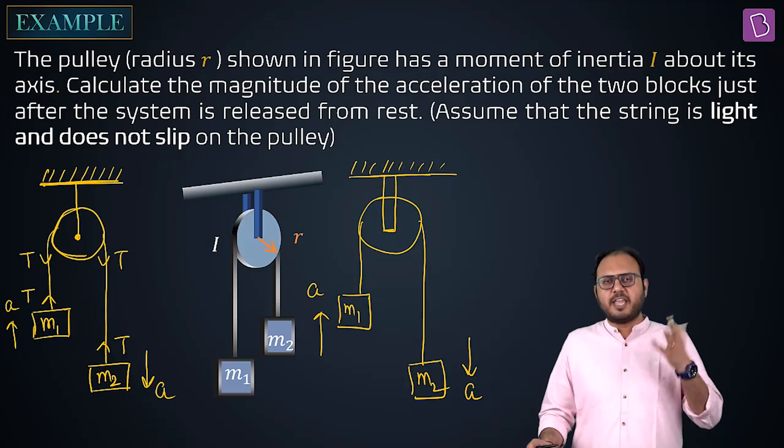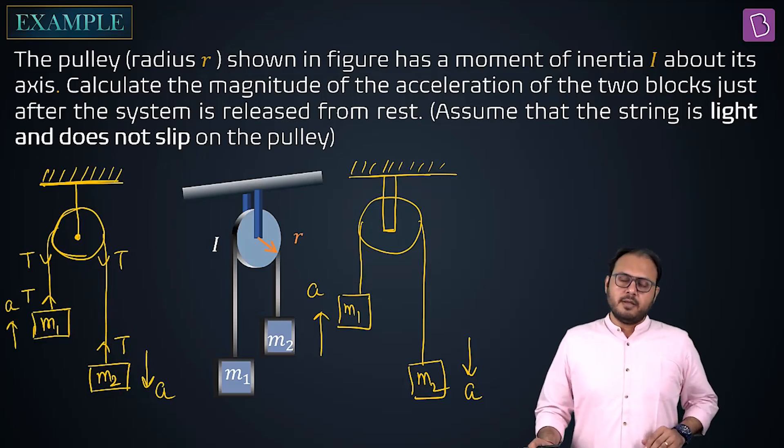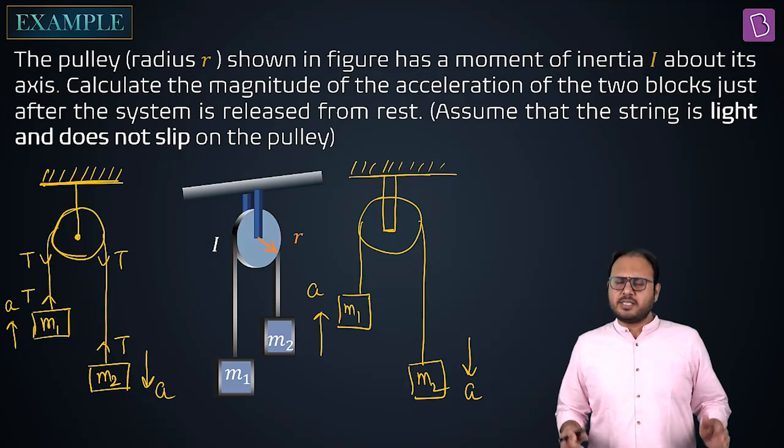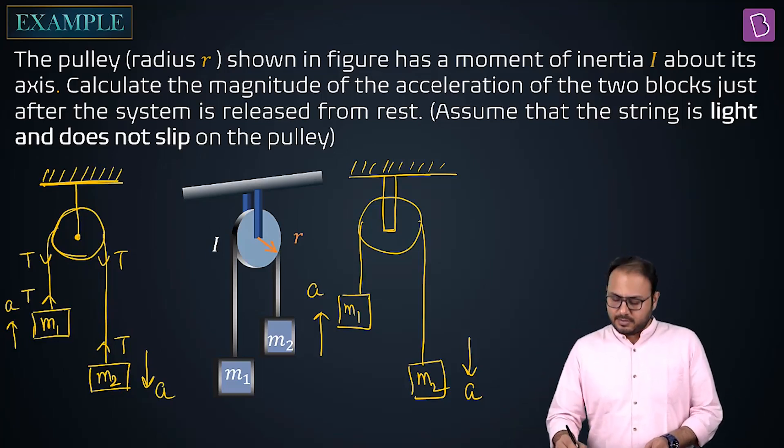Forget about it. Why will the acceleration be different? Is the string extensible? Big deal. So if the acceleration is a or the velocity is v, the acceleration is still a and the velocity is still v.